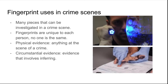Circumstantial evidence is evidence that involves an aspect of inferring. For instance, physical evidence would be that someone's fingerprints were found at the scene of the crime. Circumstantial evidence would be that, considering they were the only other fingerprints besides the victim's, they must have committed the crime — we are inferring that they did it based on the physical evidence.